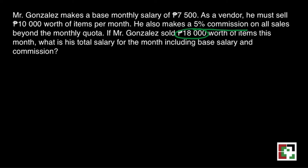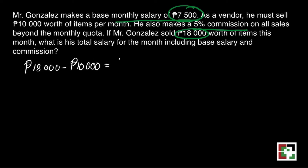Then we will add this to his monthly salary of 7,500 pesos. We will subtract 18,000 minus 10,000, which equals 8,000 pesos. Why did we do that? Because Mr. Gonzalez has a monthly quota of 10,000 pesos but he was able to sell 18,000 pesos.